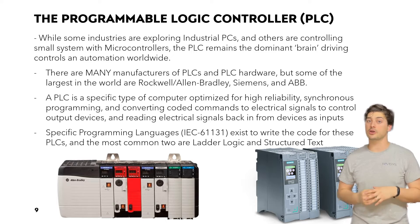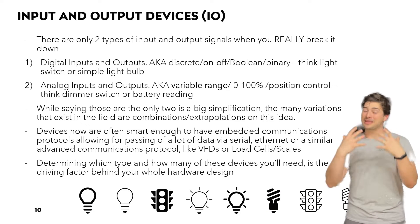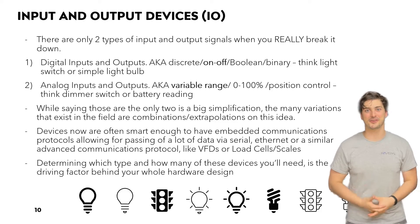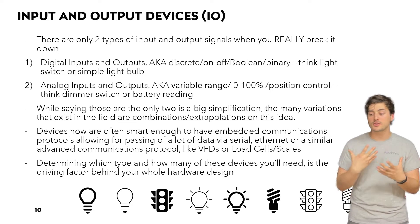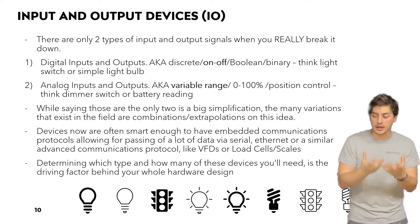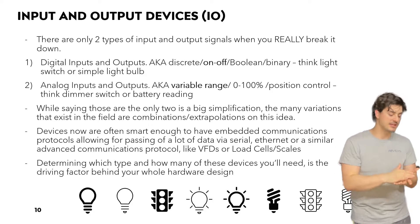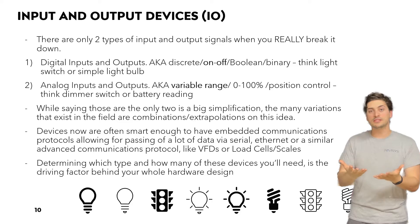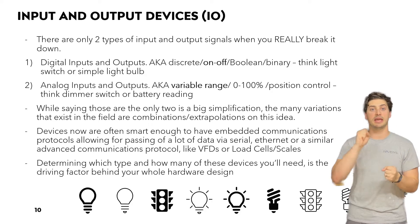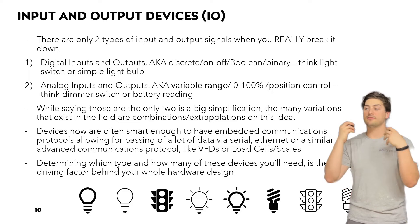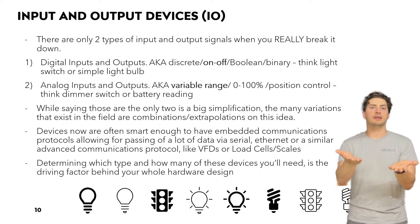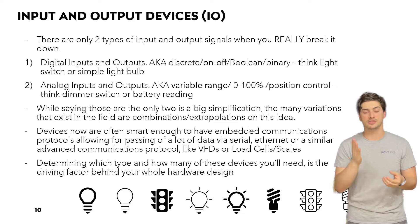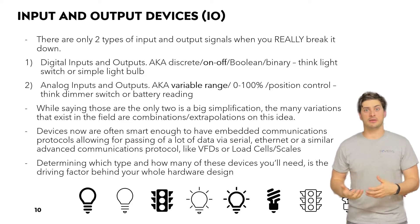People with a mechanical or electrical background often pick up ladder logic. To talk a bit more about input and output devices, there are really only two types — and I'm simplifying because this is a crash course. Digital inputs and outputs, also known as discrete, boolean, on-off, or binary — think of a simple light switch, only two states. Examples in the field could be a start-stop pump or motor, a valve that is open or closed, or a push button that is either pressed or not pressed.